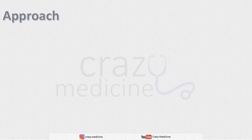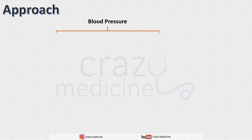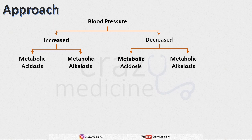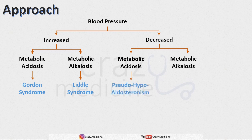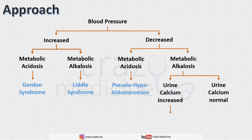Let's see the approach to all these syndromes so that you can answer effectively in the NEET exam. The first step is to check blood pressure — whether it is high or low. With high blood pressure: if there is metabolic acidosis, the cause is Gordon syndrome; if there is metabolic alkalosis, it is Liddle syndrome. With low blood pressure: if there is metabolic acidosis, it is pseudo-hypoaldosteronism. If there is low BP with metabolic alkalosis, check urinary calcium levels — if high, it is Bartter syndrome; if normal or low, it is Gitelman syndrome.